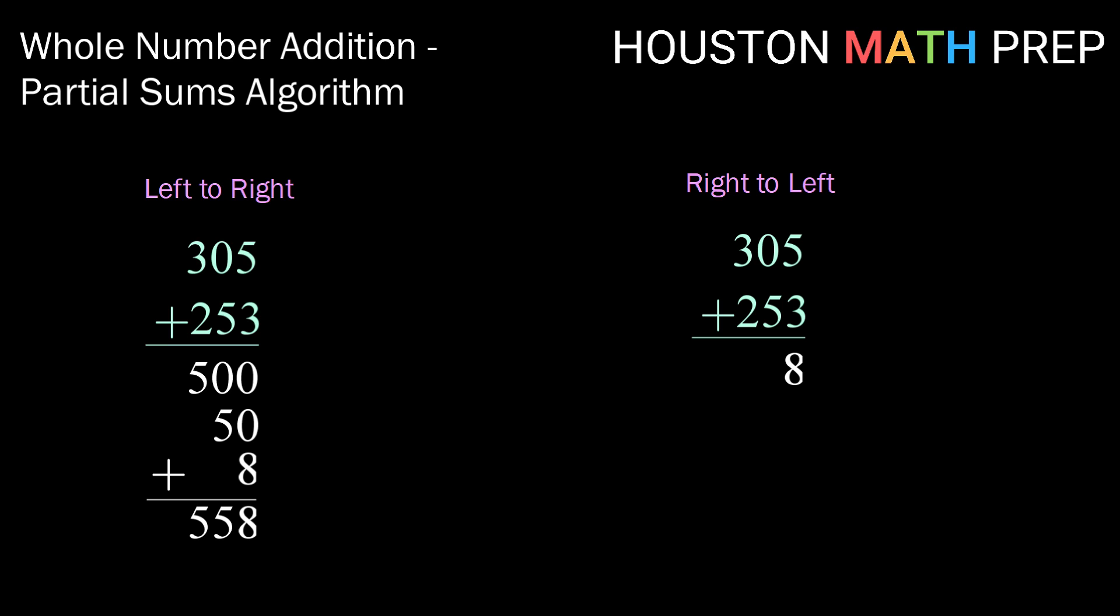Now moving into the middle, 0 tens plus 5 tens or 0 plus 50 gives us 50. And moving all the way to the left, 300 plus 200 is again 500. Adding those values up, we get 558.